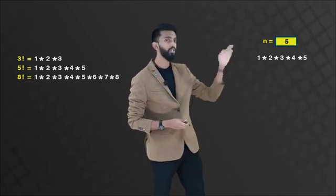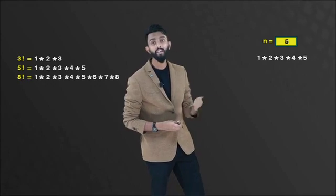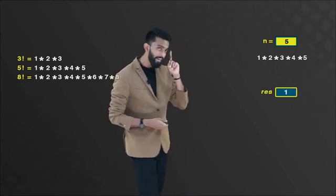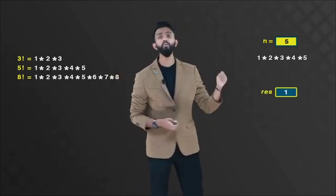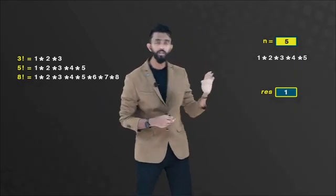Now, to do this, what I will do is, to store the factorial of the number, which in this case is 5, I am going to create a variable called RES or short for result. And initially, if you notice, the value of result is 1. Now, you might be thinking, why is it 1? Well, it's very simple.